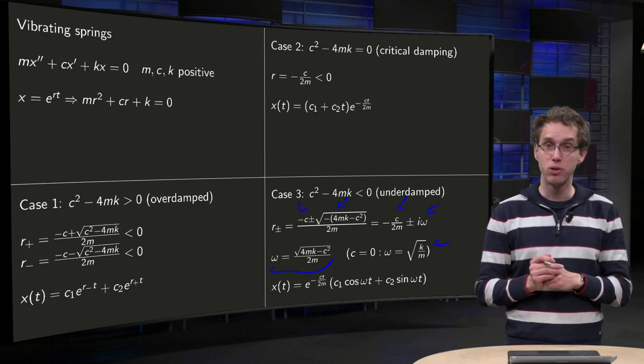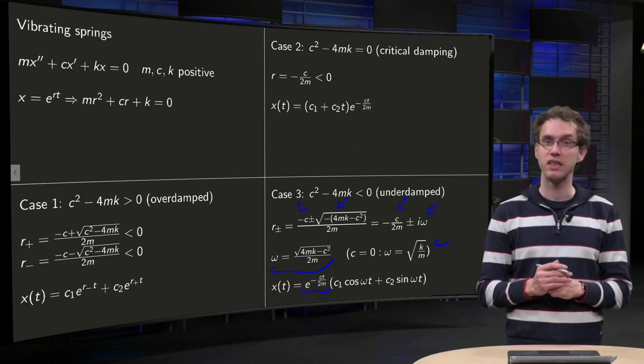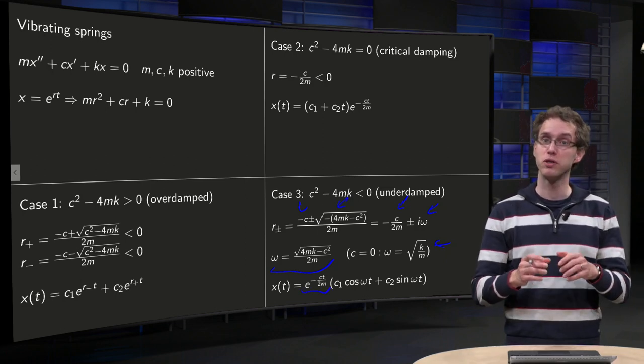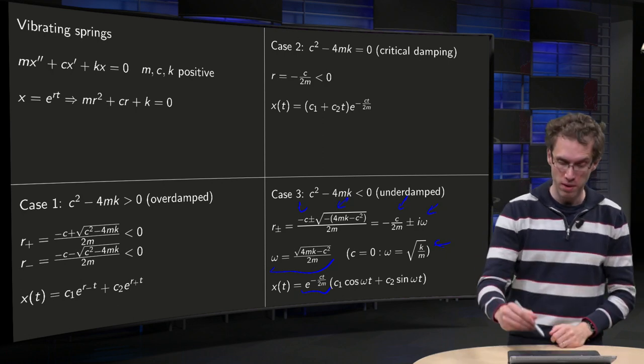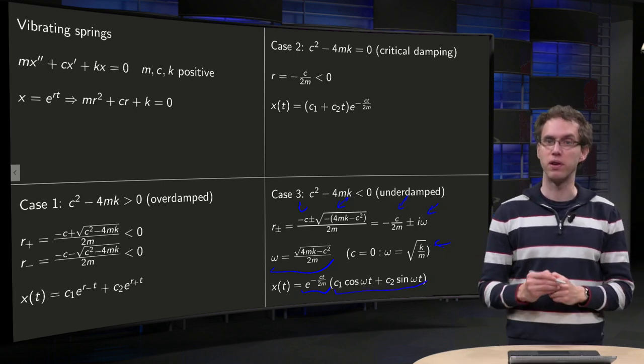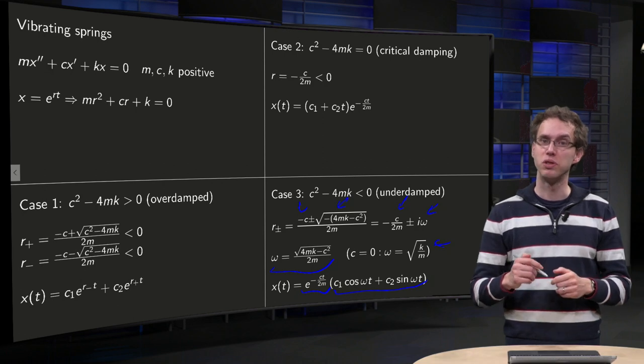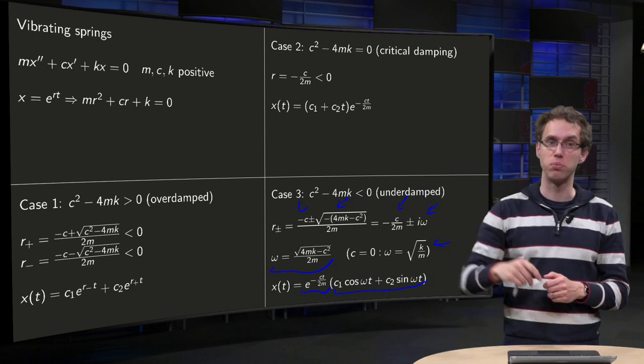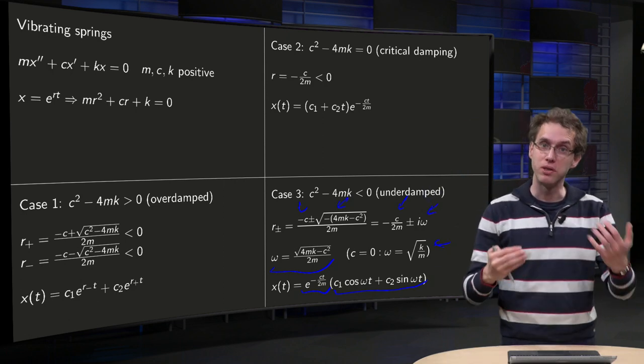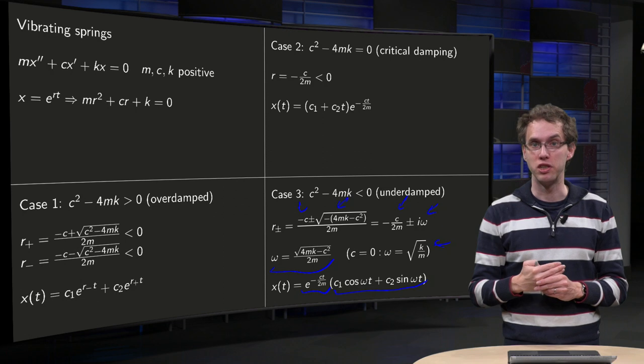How do your solutions look like? Well you have some damping factor e to the power minus ct over 2m, so that will make your solutions become smaller in amplitude, and something which is oscillating periodically. So what you get is oscillating solutions, which are oscillating with a smaller and smaller amplitude until the oscillations damp out.